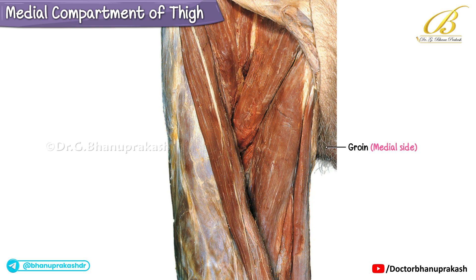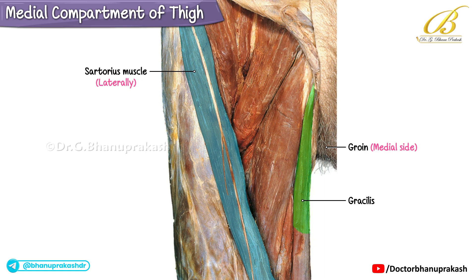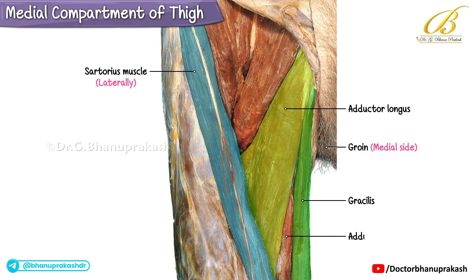For orientation, the groin is seen on the medial side, while laterally the sartorius muscle runs diagonally from lateral to medial. The medial most muscle in this view is the gracilis. Lateral to it lies the adductor longus, and between the gracilis and adductor longus, a smaller portion of the adductor magnus can be seen. Lateral to the adductor longus is the pectineus muscle. These constitute the superficial muscles of the adductor compartment.